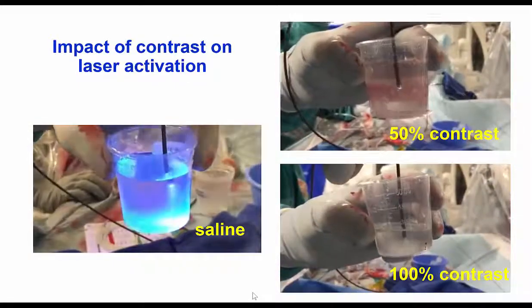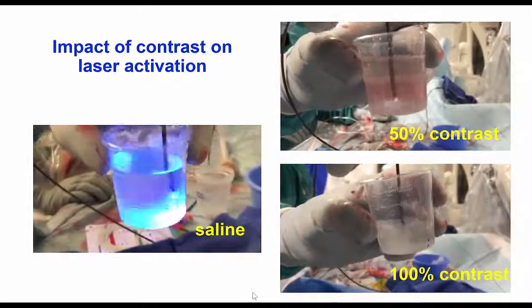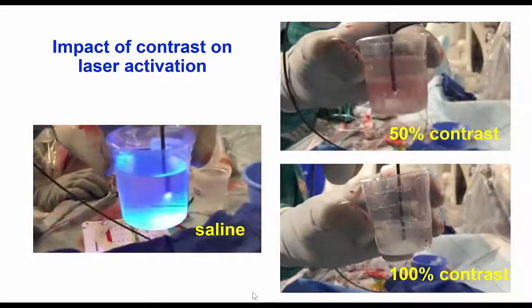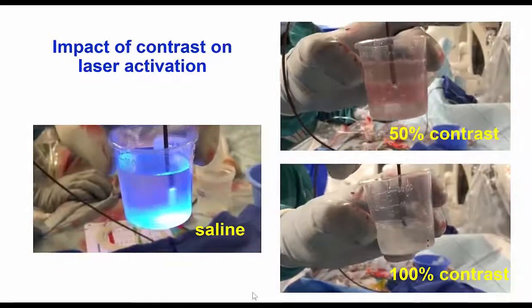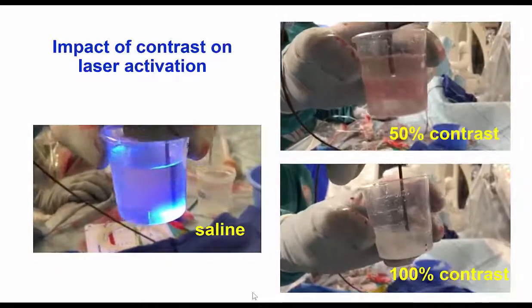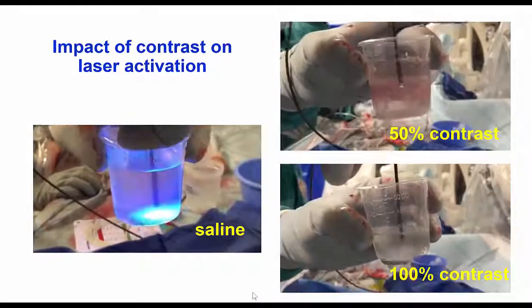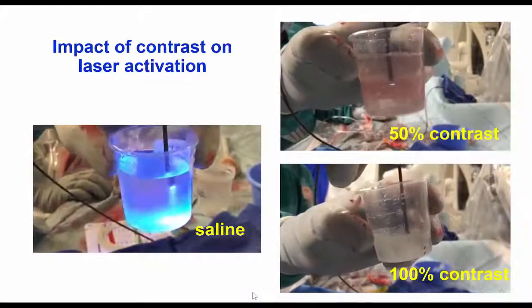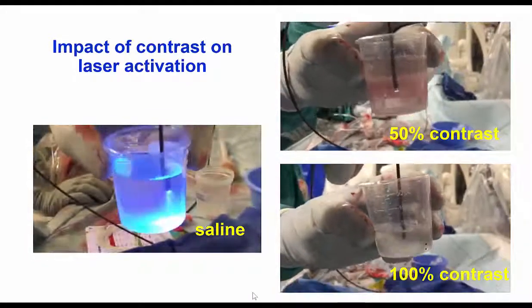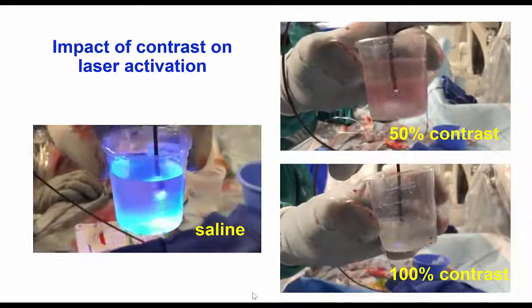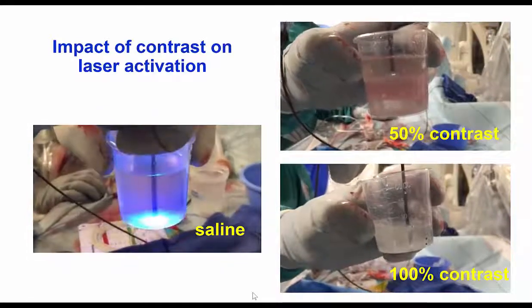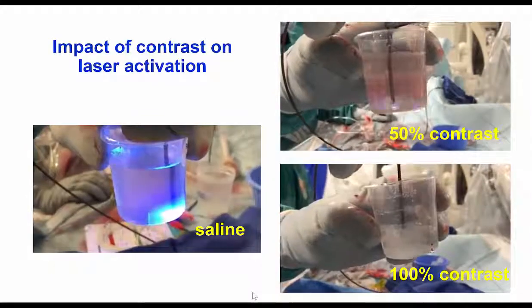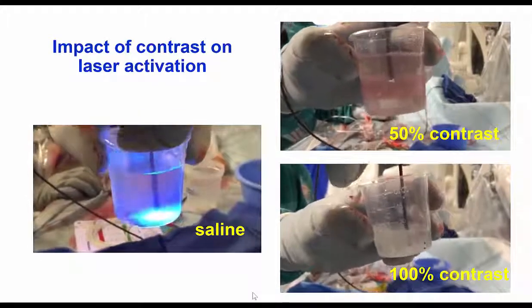Having said that, there are specific cases in which laser can be activated with contrast within the coronary artery. Typically, these are cases of in-stent restenosis in an area of stent under-expansion that we cannot expand the vessel. By giving very brief injections of contrast during activation of the laser, it can help with modifying the stent and allowing full stent expansion.